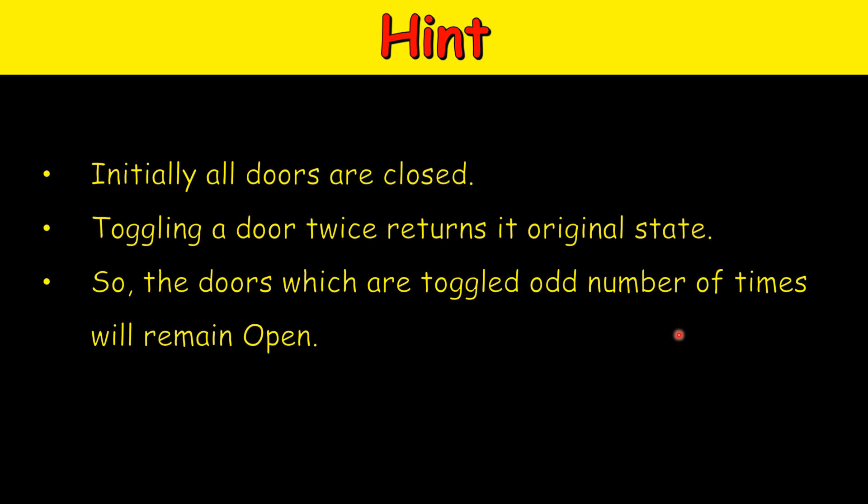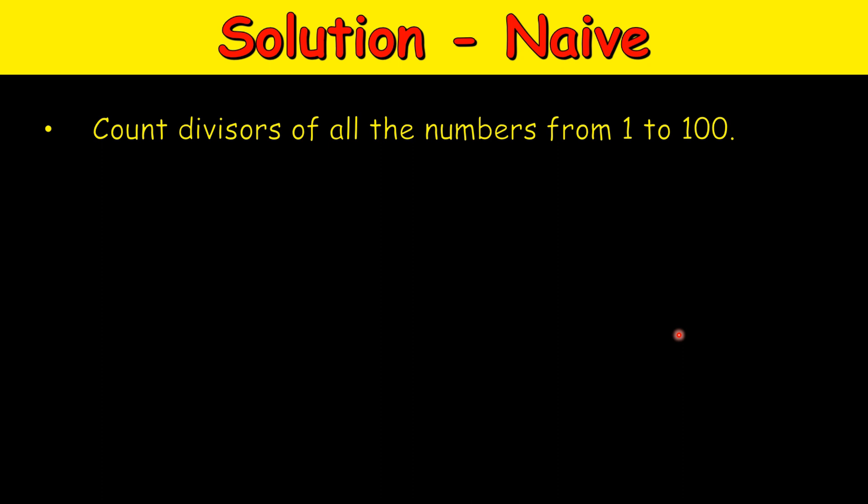Let's see a naive solution. Take door number 10 — it will be toggled in the 1st, 2nd, 5th, and 10th walks. In the 3rd walk the person toggles 3, 6, 9, 12 and so on, so 10 is not included. Similarly, in the 4th walk: 4, 8, 12 — again 10 is skipped. But in the 5th walk: 5, 10, 15, 20 — so 10 is toggled. A door is toggled a number of times equal to the number of factors it has.